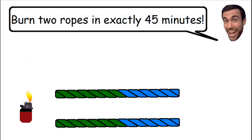The first step in solving this problem is to light both sides of one rope and to light one side of the other rope. So I am going to light both sides of the top rope and one side of the bottom rope.